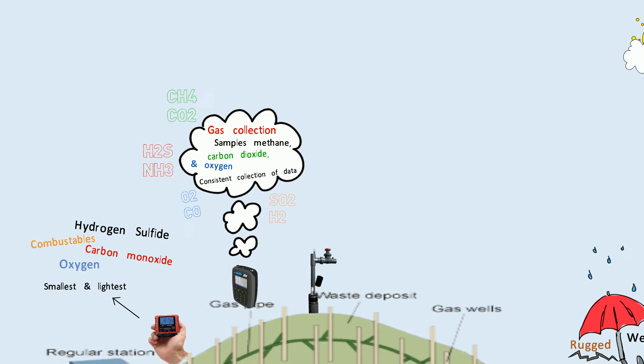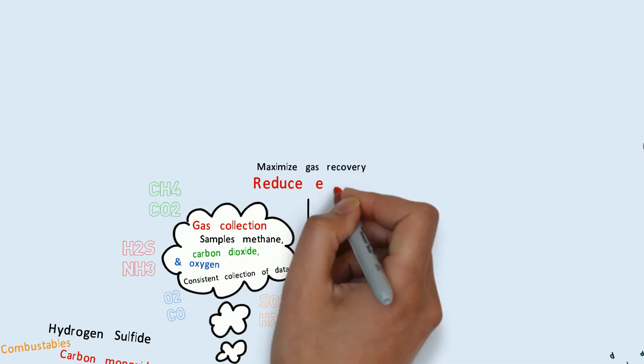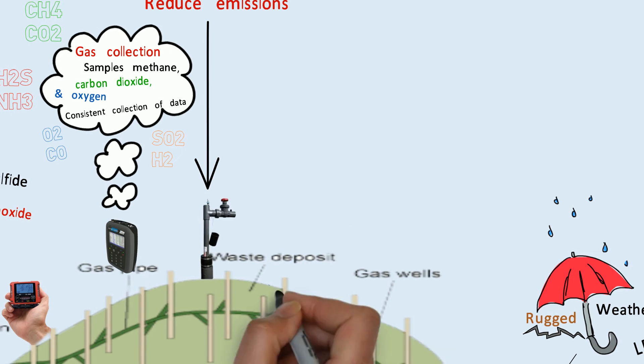Landtech AccuFlow Wellheads. These help maximize gas recovery and minimize surface emissions. They help control hot spots, subsurface fires, and are designed specifically to work with the GEM instruments.